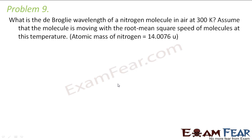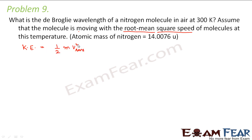Assume that the molecule is moving with the root mean square speed at this temperature. We have to calculate the de Broglie wavelength of a nitrogen molecule. For de Broglie wavelength we need mass and velocity. In this case, velocity is nothing but the root mean square speed. So what would be the kinetic energy of the molecule? It would be half mv_rms squared.